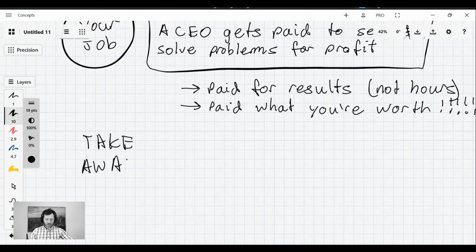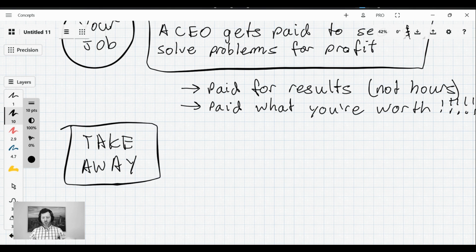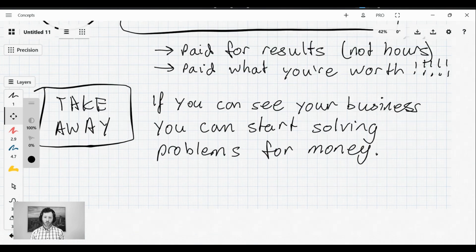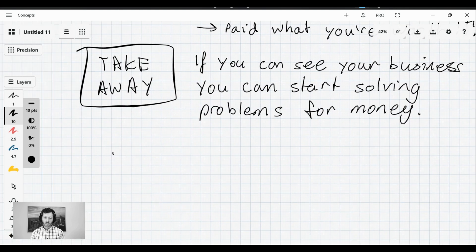Now, the takeaway from today is that if you can see your business, you can start solving problems for money. Business owners are really good problem solvers and I've got no doubt about your ability to perform this role well. But it'll be a lot easier now that we've got the lights on and we can see this money machine for what it really is rather than banging around in the dark.